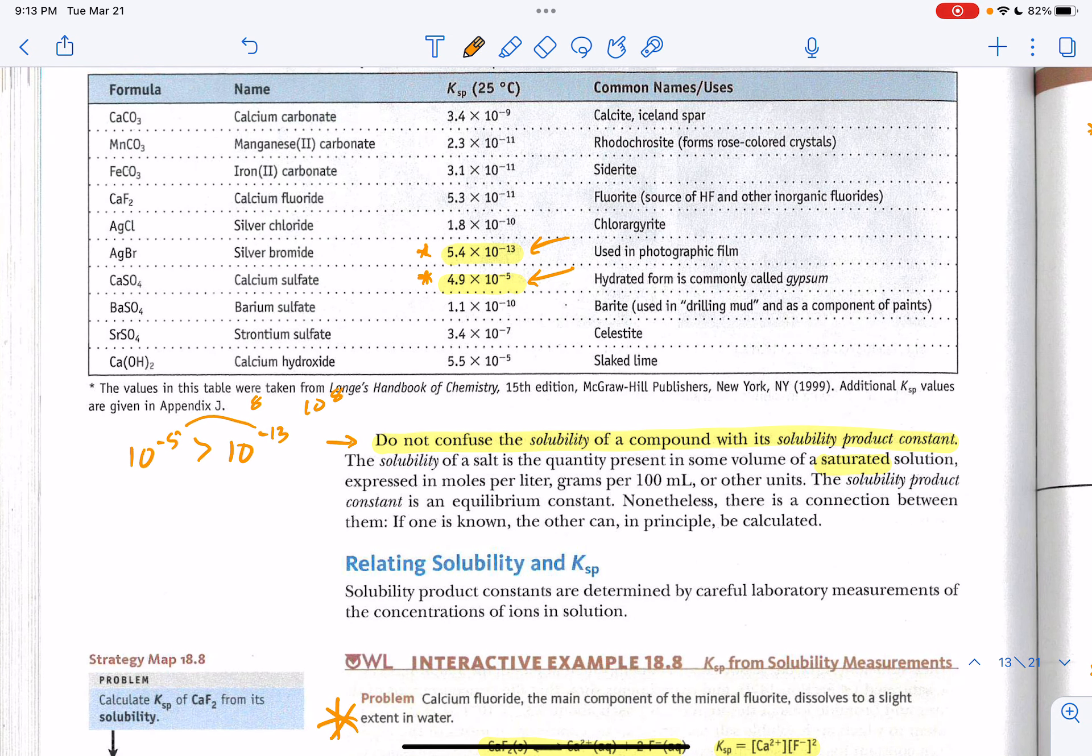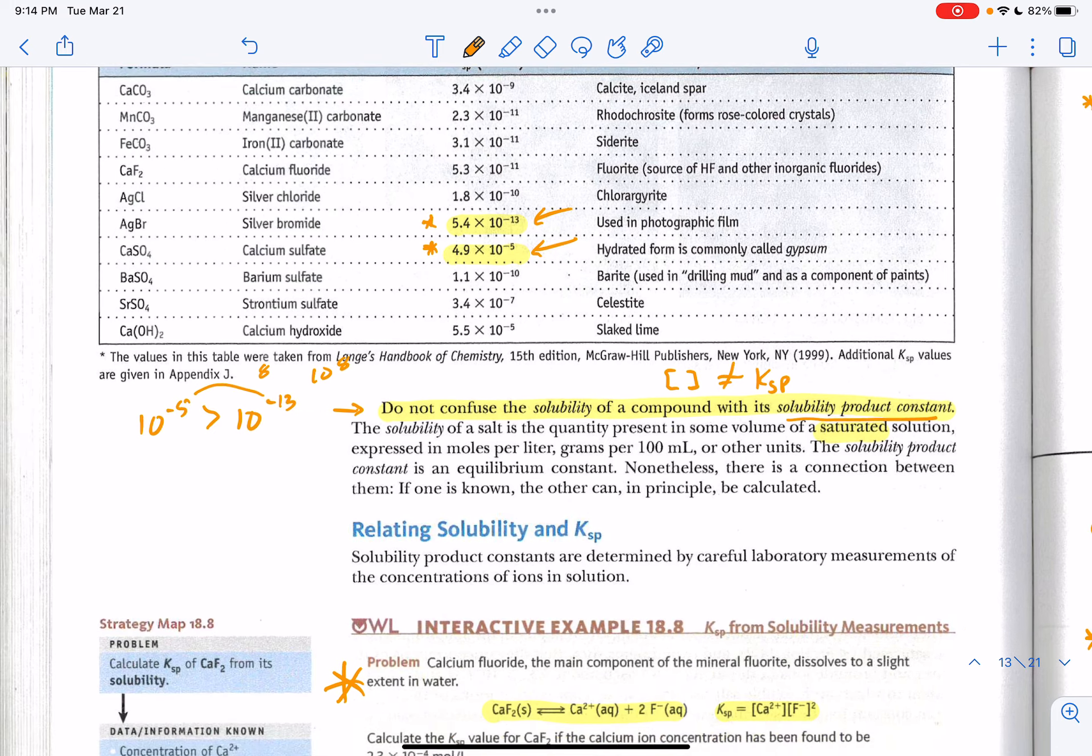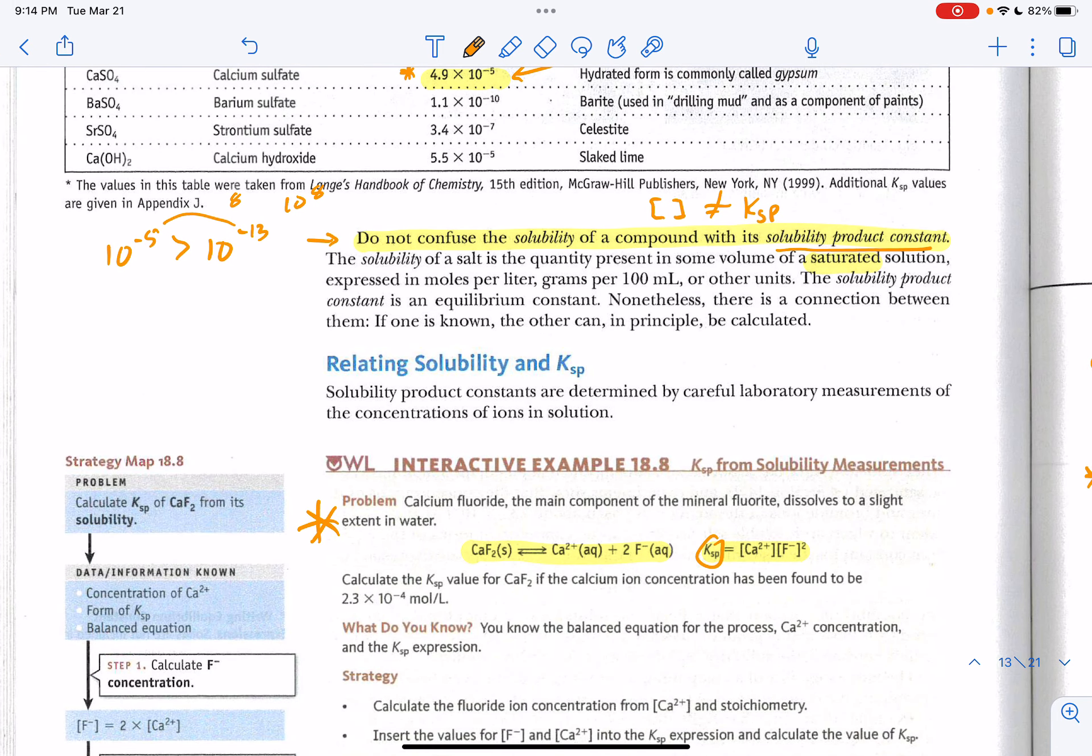You are reminded here, do not confuse solubility of a compound with the Ksp. The solubility, which is the maximum amount you can dissolve, we use brackets to represent the concentration or molarity. That is not the same thing as the Ksp. You can tell that from your Ksp expression. For example, if we come down and look here, here's the Ksp, but here's your molarities. Obviously, they're not the same thing. Sometimes students make that mistake.